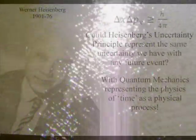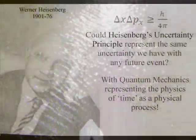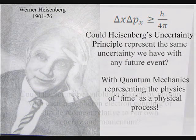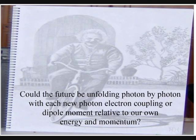The second postulate is that at the smallest scale of this process, Heisenberg's Uncertainty Principle that is formed by the wave function is the same uncertainty we have with any future event.